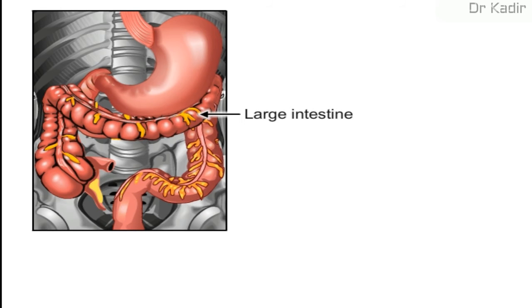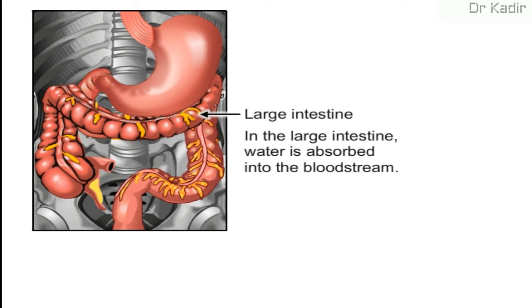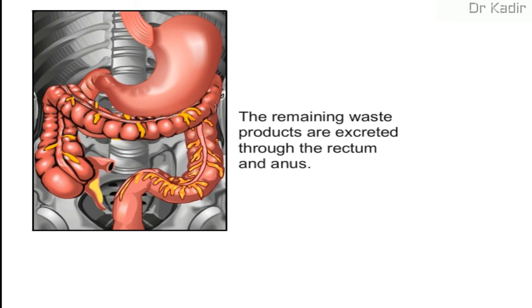In the large intestine, peristalsis helps water from undigested food be absorbed into the bloodstream. Then, the remaining waste products are excreted through the rectum and anus.